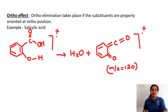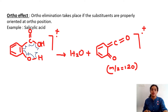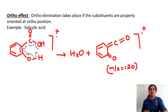A new concept here is the ortho effect — ortho elimination takes place if substituents are properly oriented at the ortho position. Taking salicylic acid as an example: two OH and C-H groups are at ortho positions, so a bond rearrangement takes place and a water molecule is expelled.